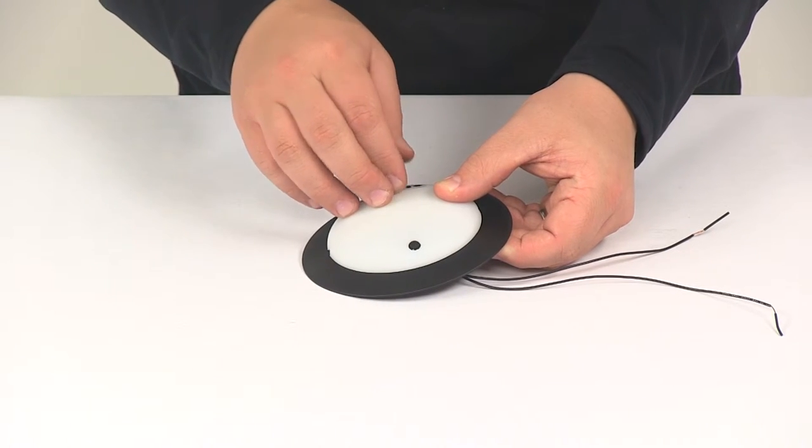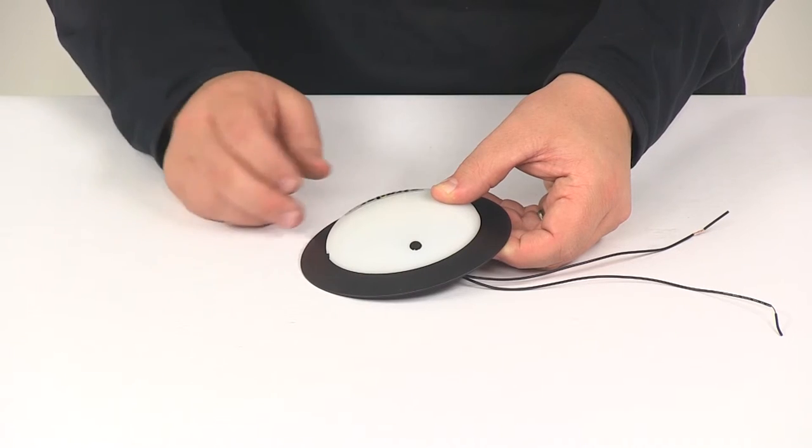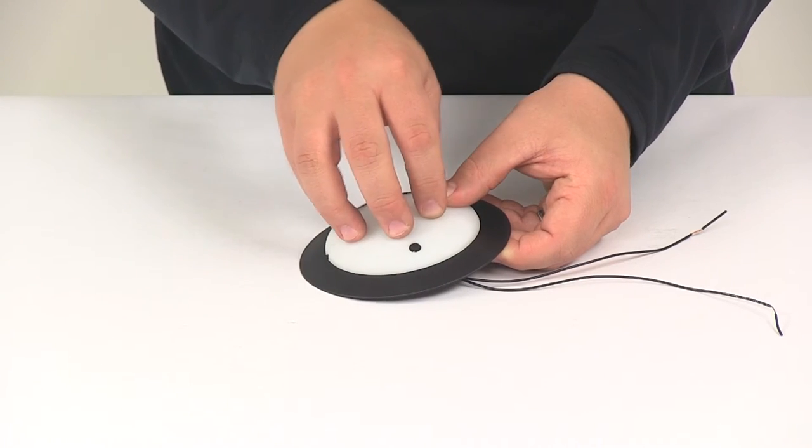The mount holes from the Puck light are going to line up perfectly with the mount holes on the trim ring. The hardware is going to go through both the light and the trim ring.